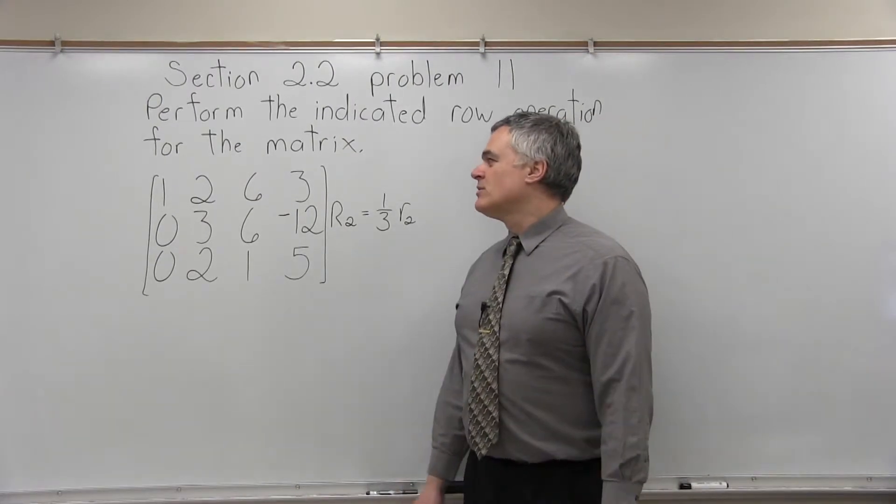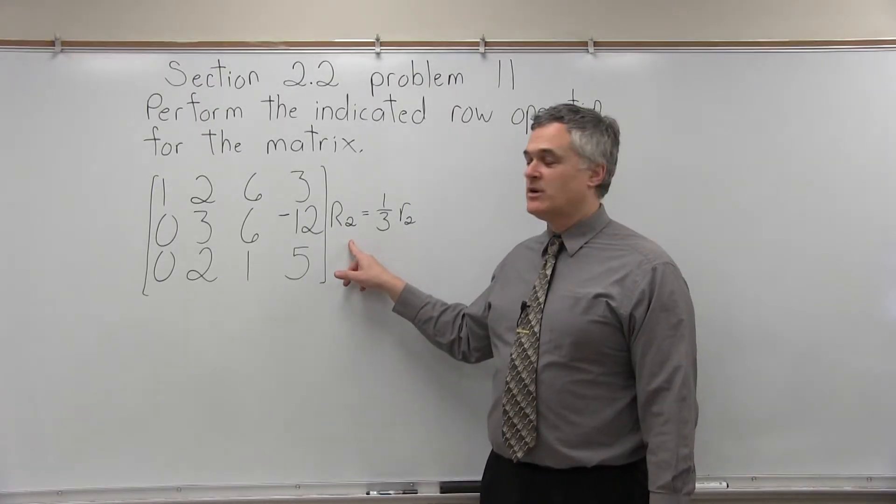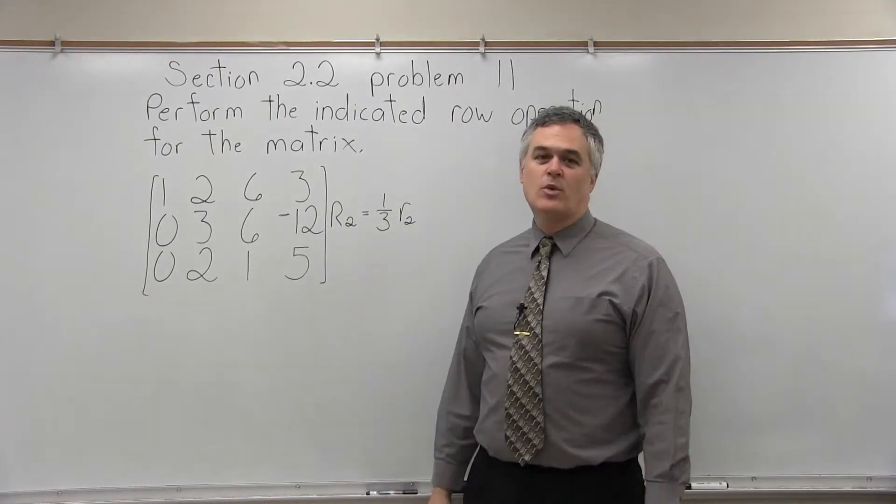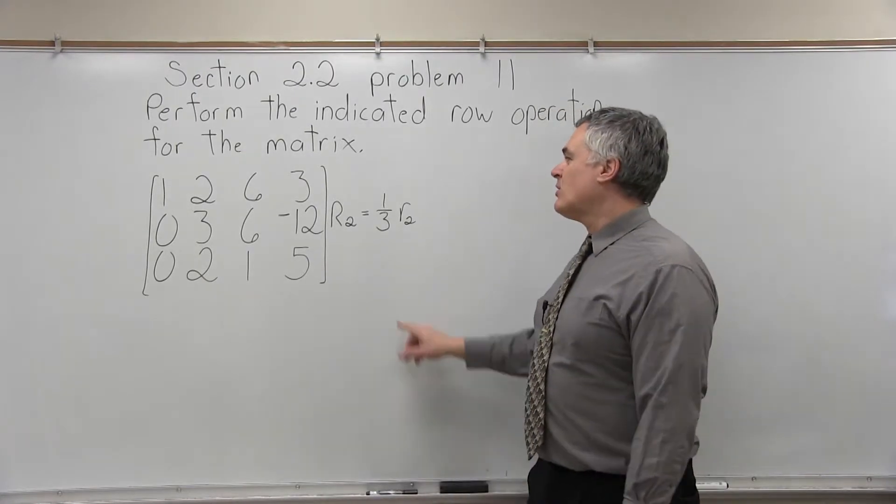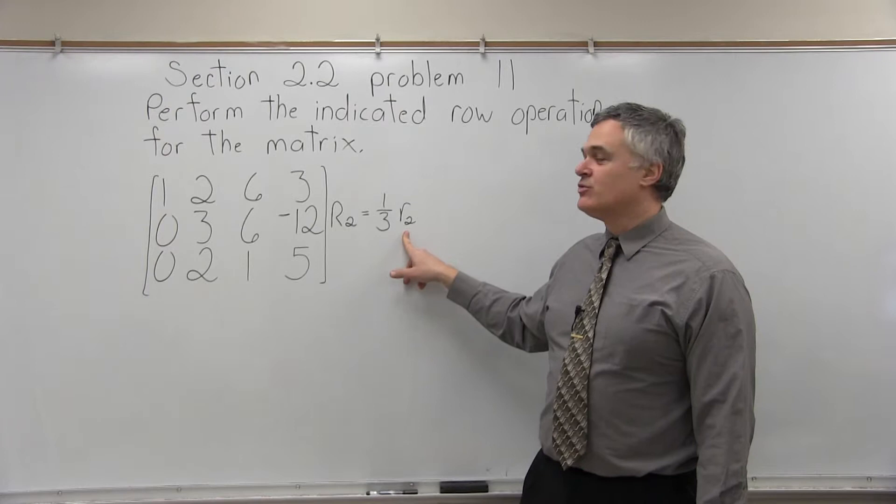And we have a matrix with three rows: 1, 2, 6, 3 for the top row; 0, 3, 6, negative 12 for the middle; and 0, 2, 1, 5 for the bottom row. And our row operation is row 2 equals 1/3rd times the old row 2.